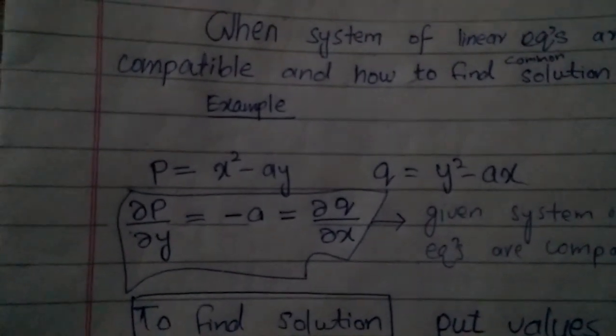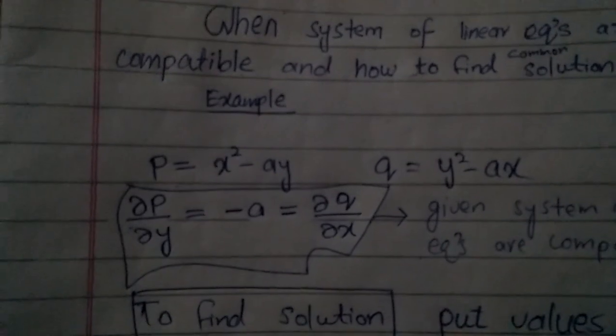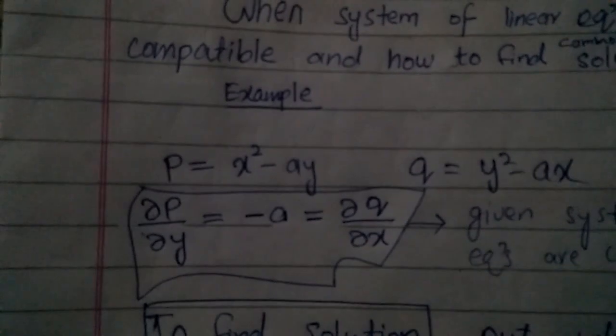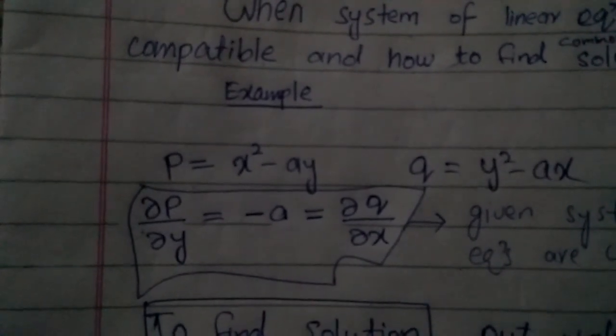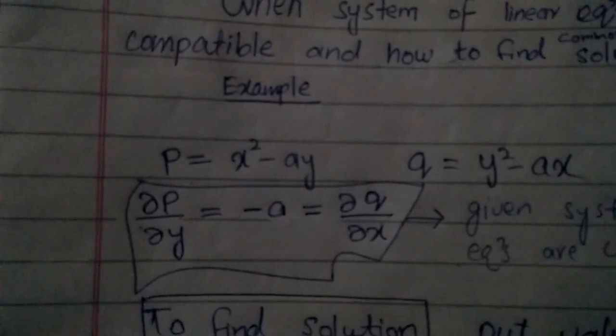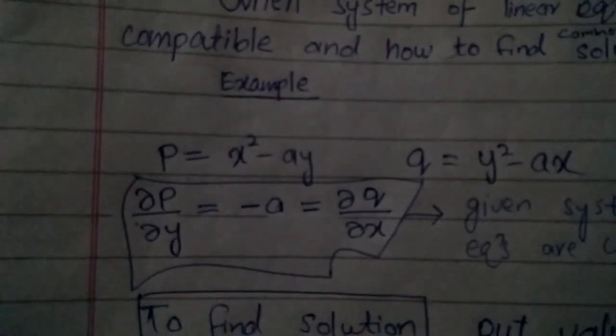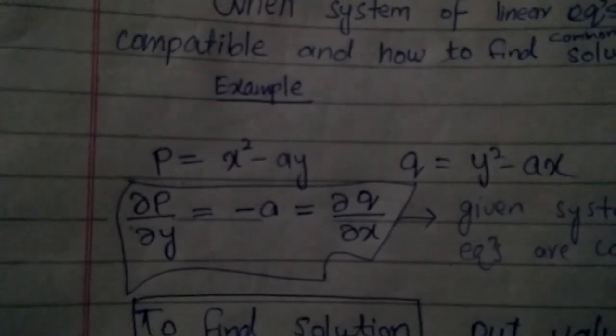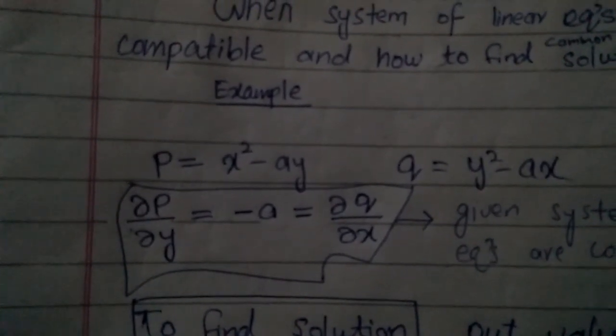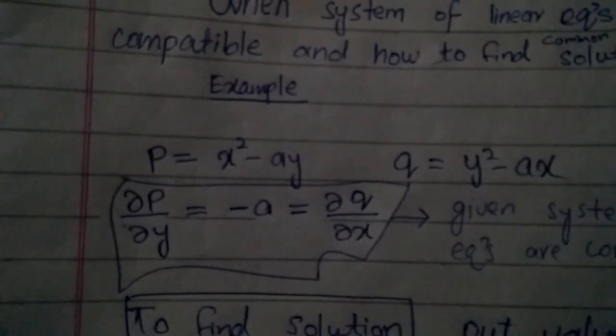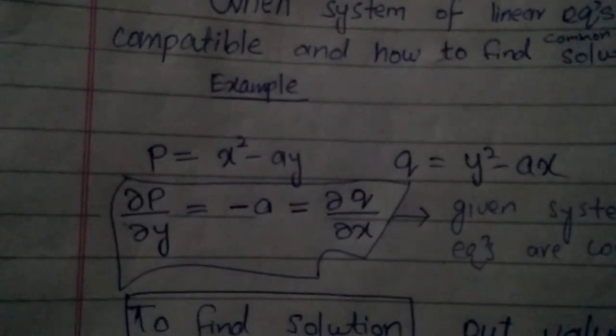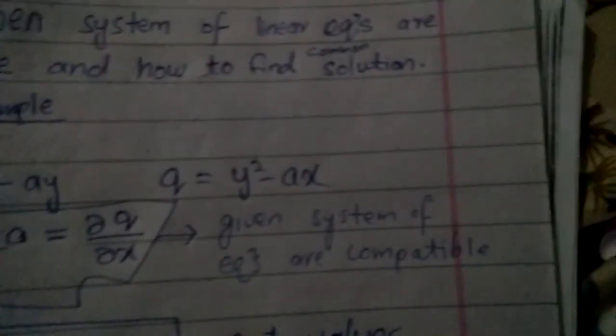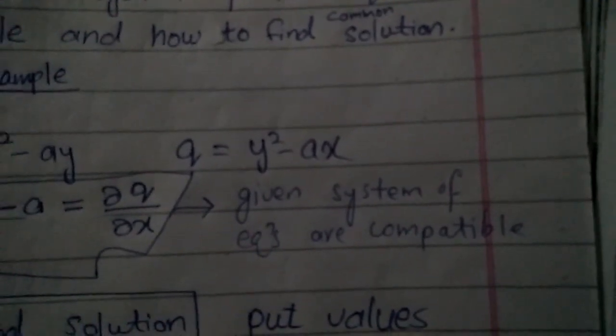If we get such a relation that partial P over partial y is equal to minus a, which equals partial Q over partial x, it means if we get the same result, then we say that the given system of equations are compatible.